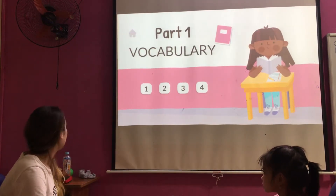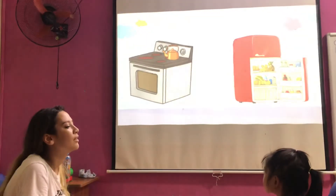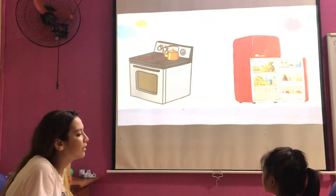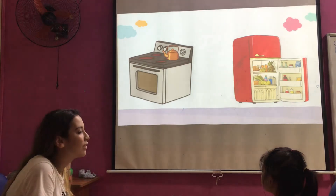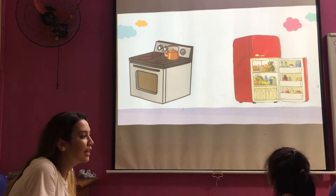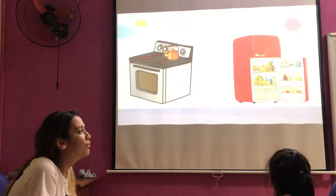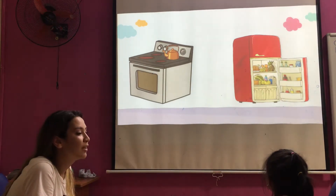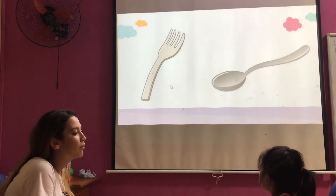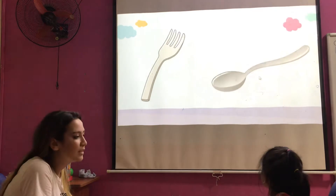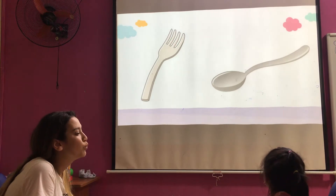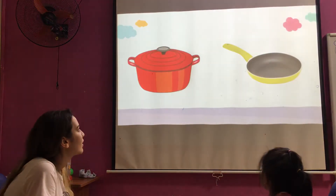So, look at the picture. What is this? It's an oven. Okay, and what is this? It's a refrigerator. Okay, next. What is this? Very good, yes. And what is this? It's a spoon. Spoon, right, good.